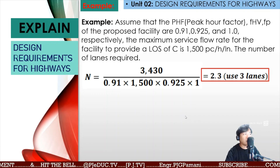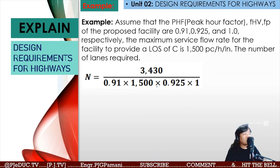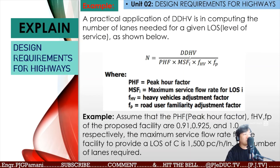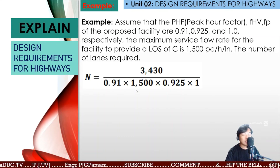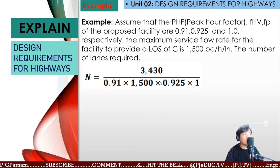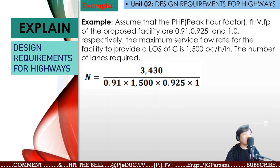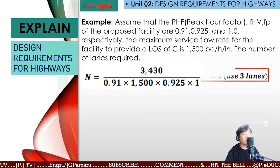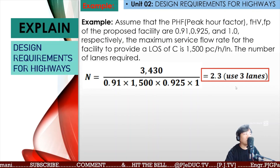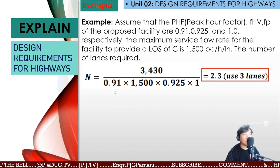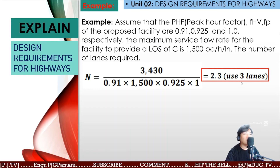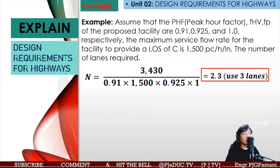The DDHV was computed as 3,430 vehicles per hour. With a PHF of 0.91, capacity of 1,500, directional factor of 0.925, and Fp of 1, we compute N = 2.3. Rounding up, we use three lanes — three-lane two-way — and the traffic scheme for left and right lane allocation is determined from there.